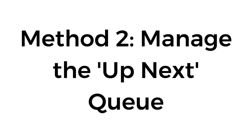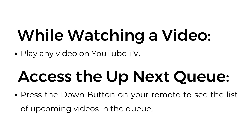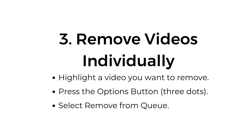Method number two: manage the Up Next queue. While watching a video, play any video on YouTube TV and access the Up Next queue. Press the down button on your remote to see the list of upcoming videos in the queue. To remove videos individually, highlight a video you want to remove.